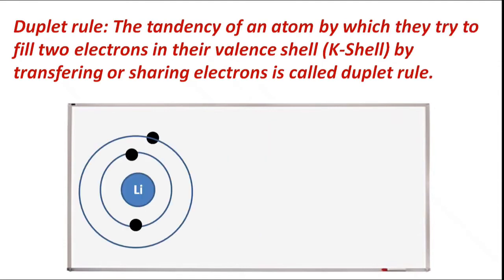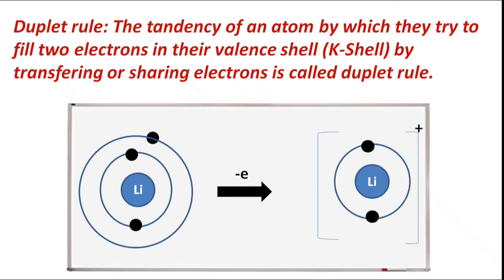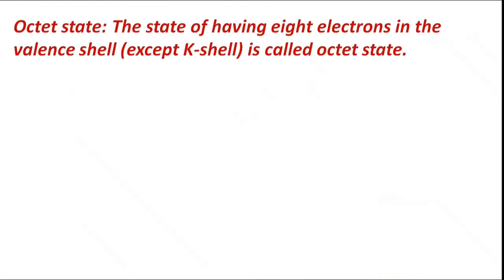According to the duplet rule, lithium loses one electron and changes into a lithium ion, with a positive charge on the lithium ion developed due to the loss of one electron.